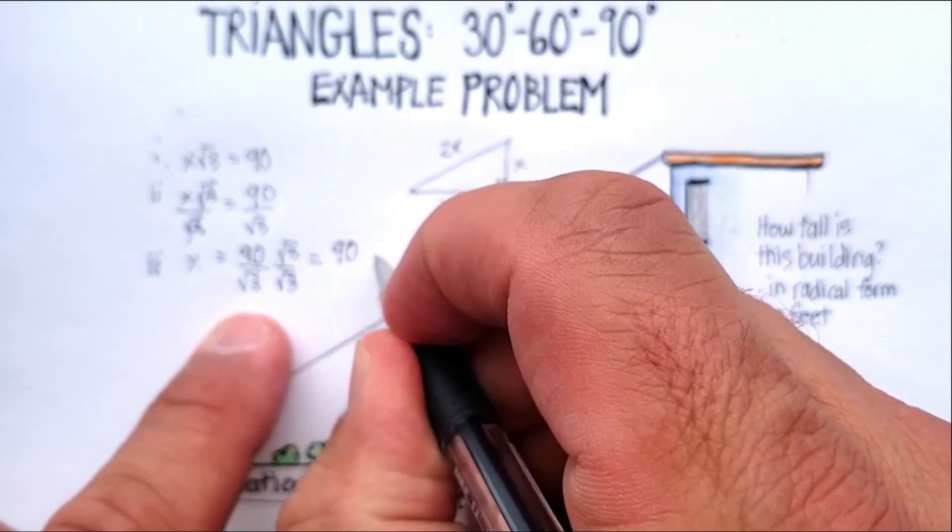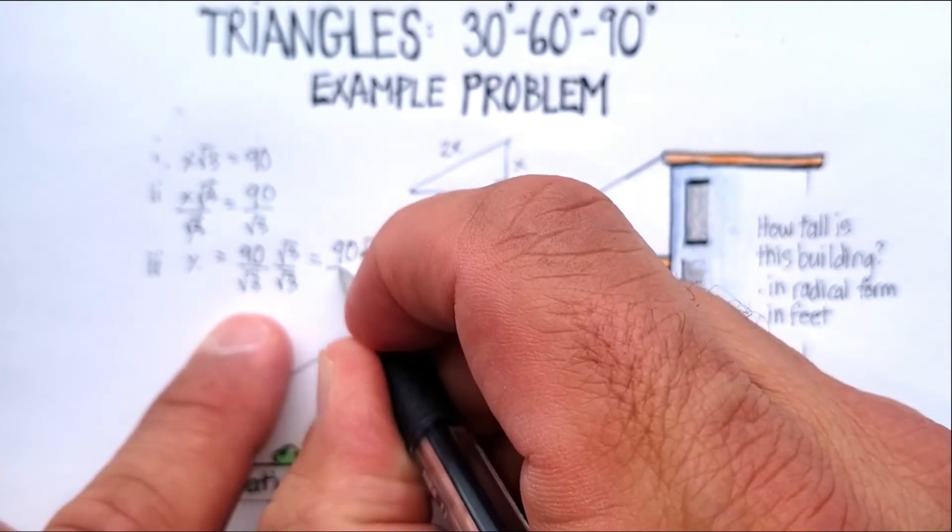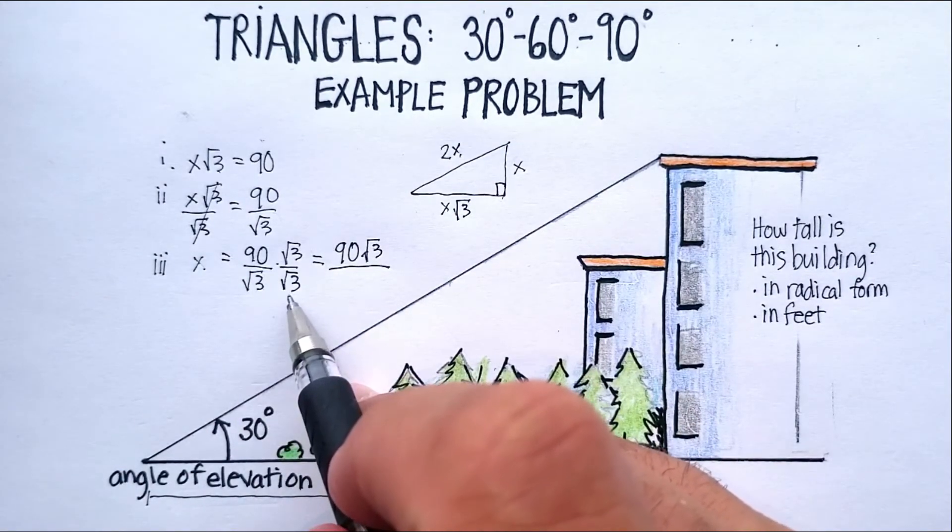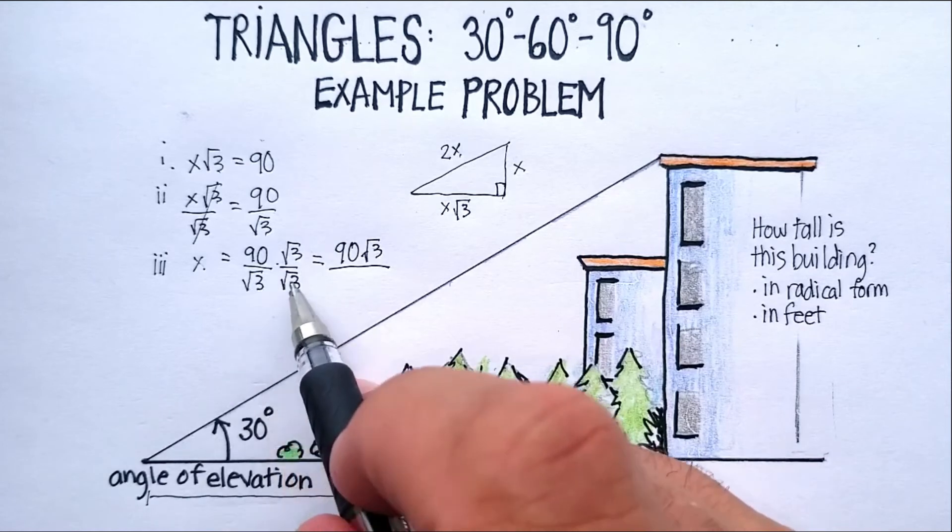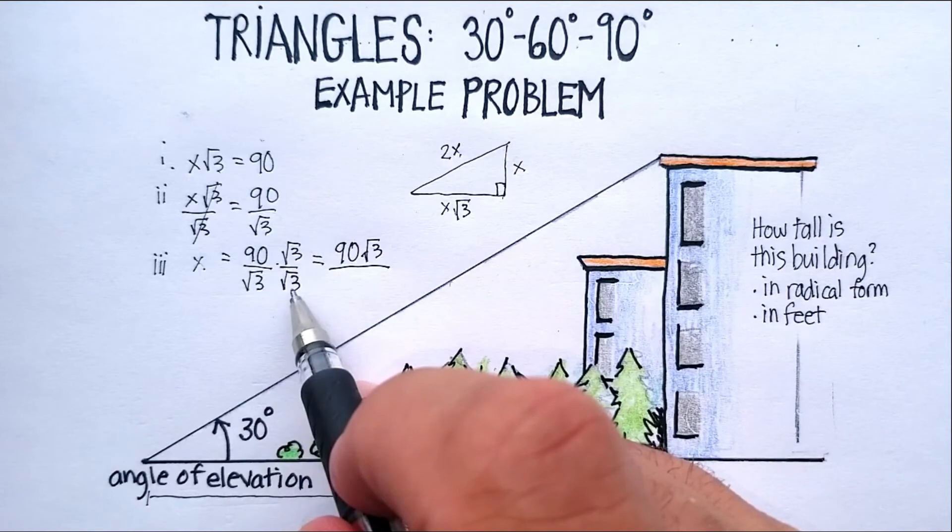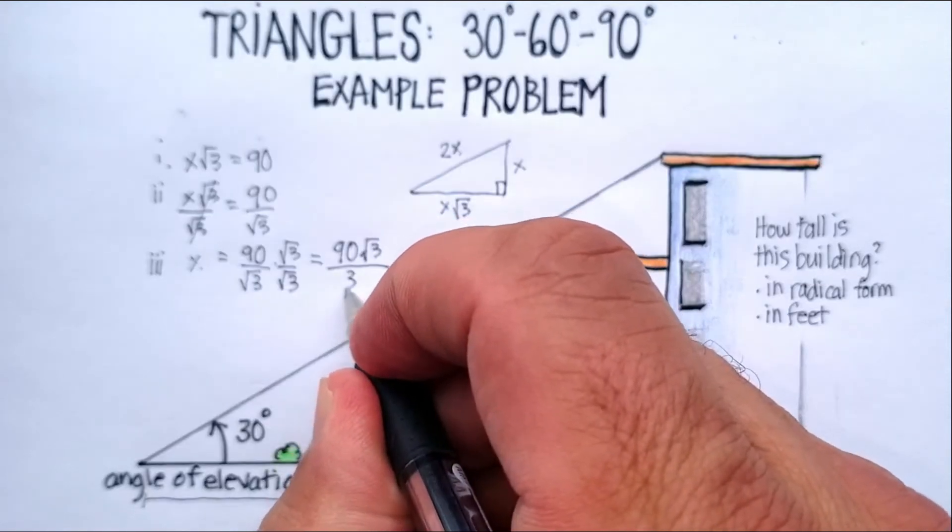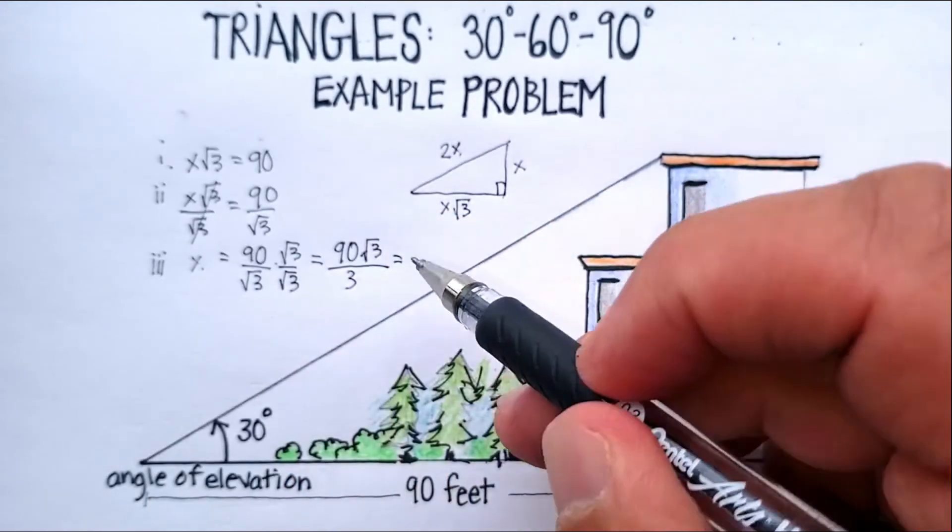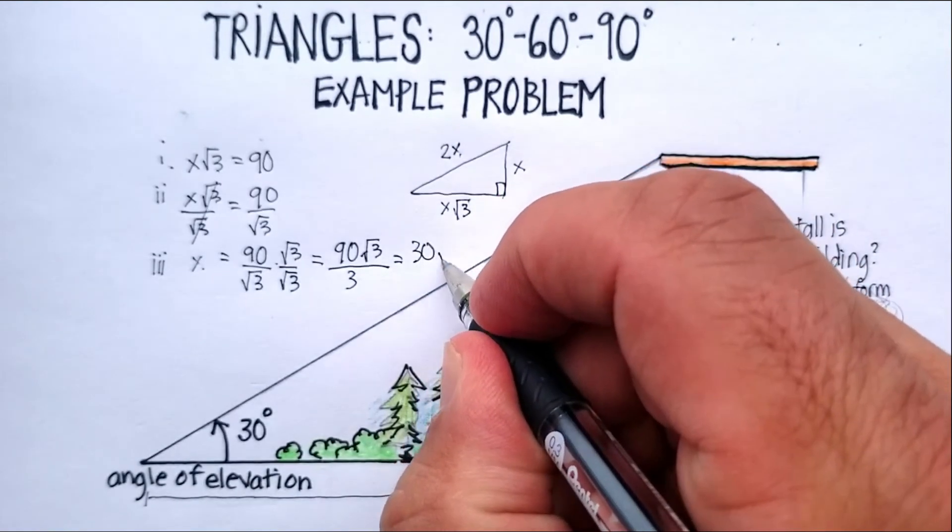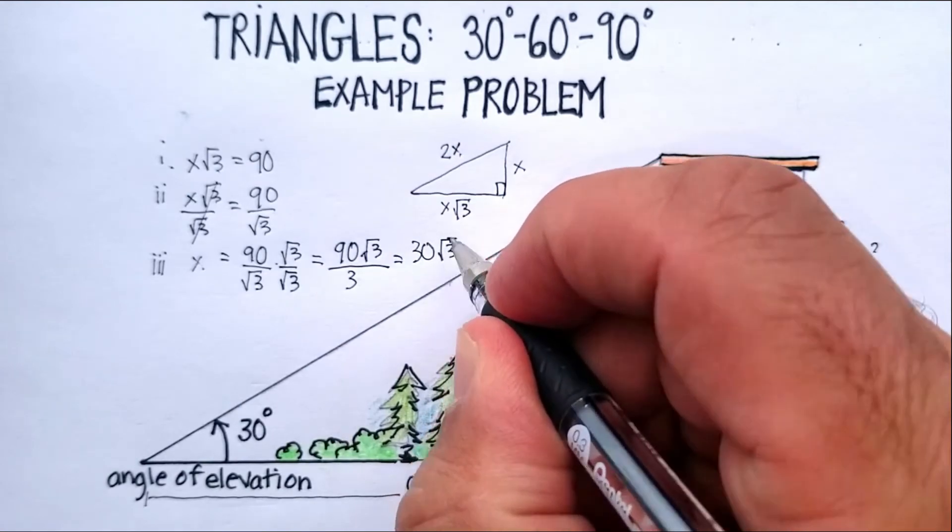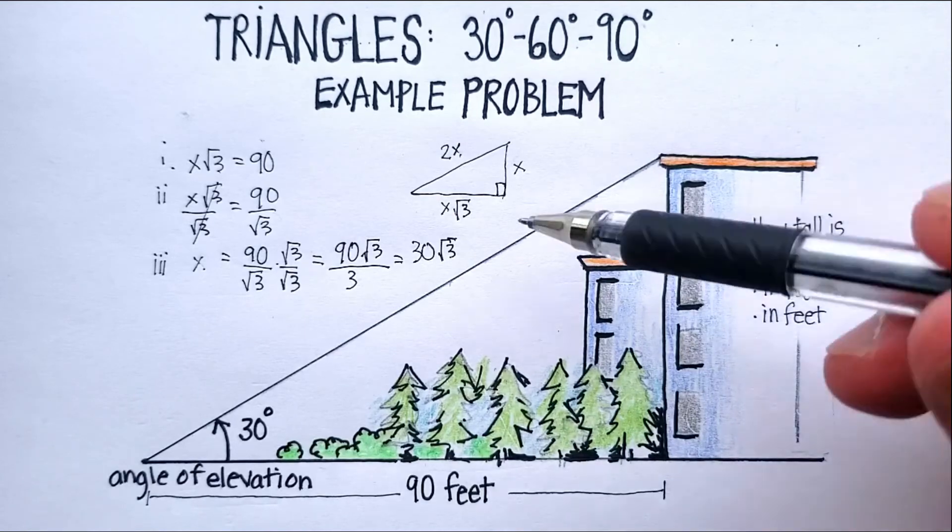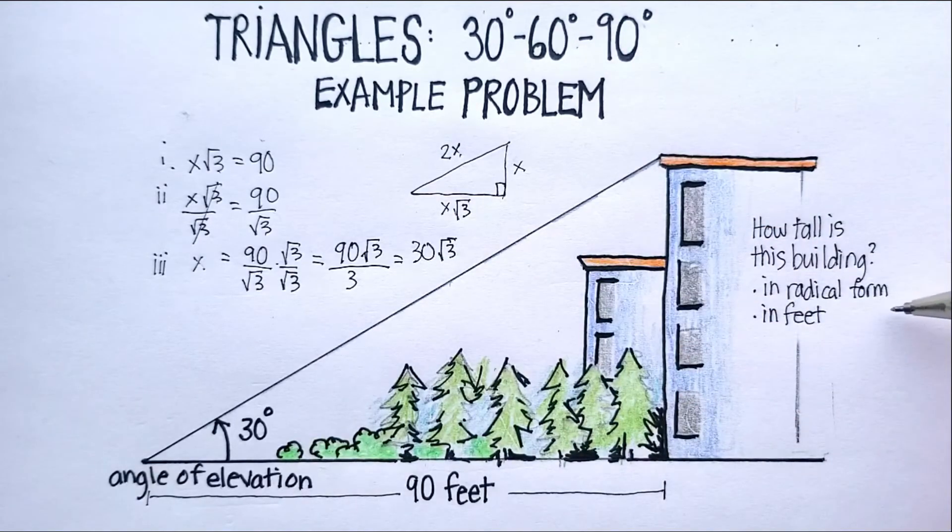That becomes 90√3. And remember that when you multiply a square root times a square root, you basically just make the square roots disappear. So you end up with √9 or just 3. And here, I can reduce 90 over 3 to 30√3. So for the first part of our question, what is the height of this building, we would say 30√3 feet high.